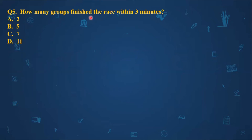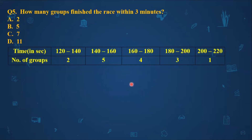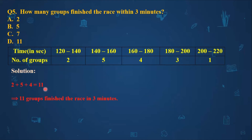The last MCQ asks how many groups finish the race within three minutes. Within three minutes means less than three minutes — be careful about this. Since one minute equals 60 seconds, three minutes equals 180 seconds. Since 180 is the upper limit of a class, it is not included, so we add the frequencies up to that point: 2 + 5 + 4 = 11. Eleven groups finish the race in three minutes, so the correct option is option D. Remember, you have to attempt only four of the five MCQs, each for one mark, making four marks total for the case study.